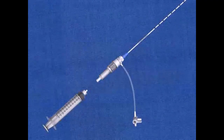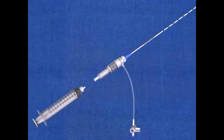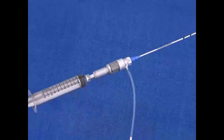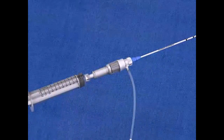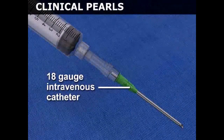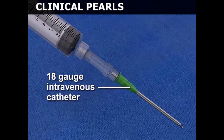Prepare the paracentesis catheter assembly by attaching a 10-milliliter syringe to the back of the assembly. If a paracentesis catheter is not available, the procedure may be performed with an intravenous catheter in an analogous fashion as described below.